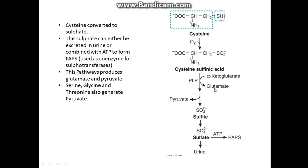Cysteine is converted to its sulfinate — cysteine sulfinic acid. The sulfinate can either be excreted in the urine or combined with ATP to form PAPS, which is used as a coenzyme for sulfatransferases. This pathway also produces pyruvate and releases sulfite, which is converted to sulfate. The sulfate can then either be used with ATP to produce PAPS or is excreted in the urine. Serine, glycine, and threonine also produce pyruvate.